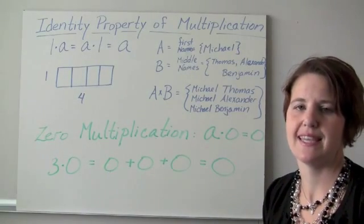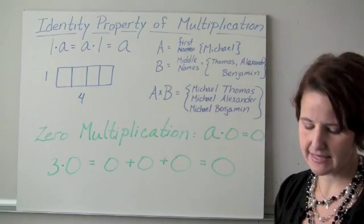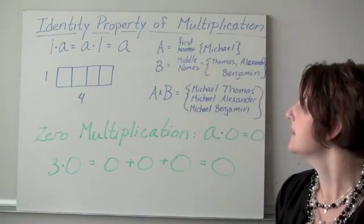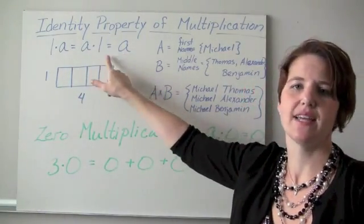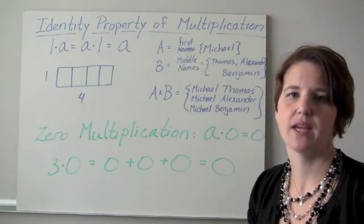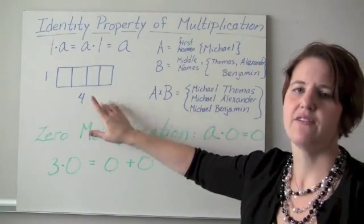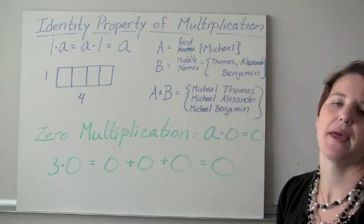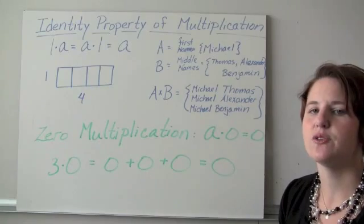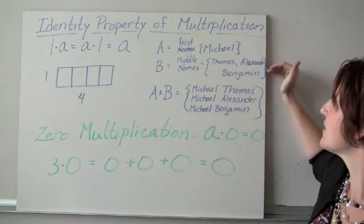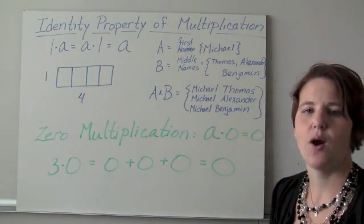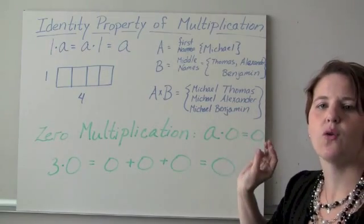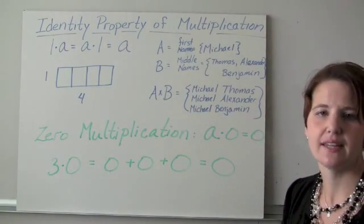A fourth property for multiplication is the identity property. The multiplicative identity is the number 1, meaning 1 times any whole number just gives us that whole number back. So 1 times A equals A, and A times 1 equals A — because we have the commutative property. Here's an area model: a 1 by 4 rectangle has 4 squares inside. The Cartesian product model also illustrates this — if the first name is Michael and the middle names are Thomas, Alexander, or Benjamin, the cross product gives three choices, showing 1 times 3 equals 3.